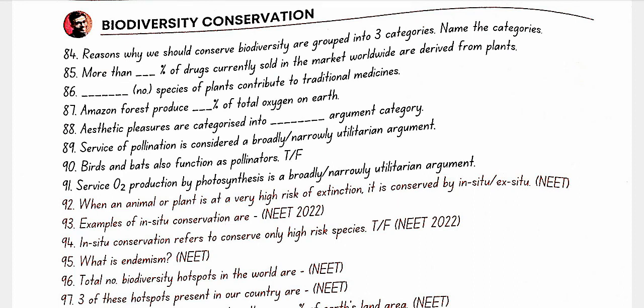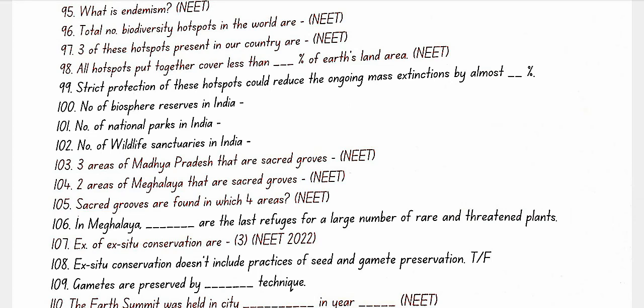When a species is at very high risk of extinction, it is conserved by ex-situ methods. In-situ conservation refers to conserving and protecting the whole ecosystem — examples are biosphere reserves, national parks, and wildlife sanctuaries. Endemism refers to species confined to a specific region not found anywhere else. The world has 34 biodiversity hotspots; three present in India are Western Ghats & Sri Lanka, Indo-Burma, and Himalaya.